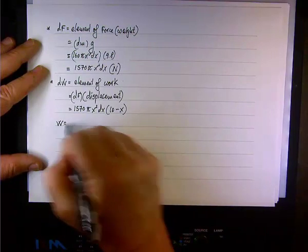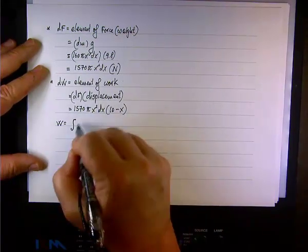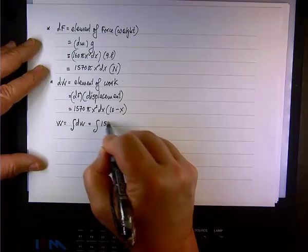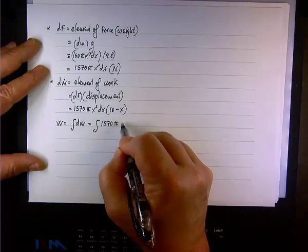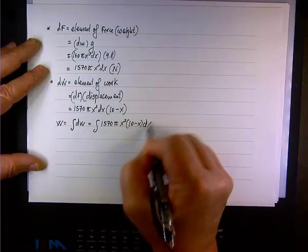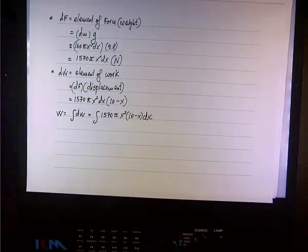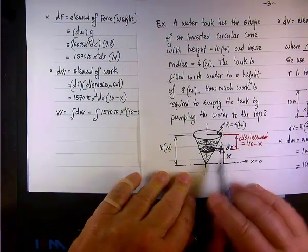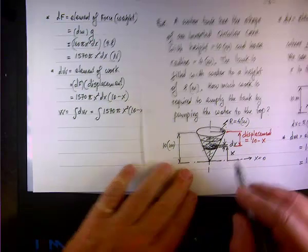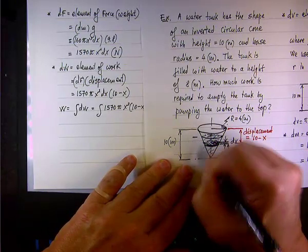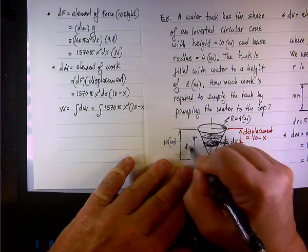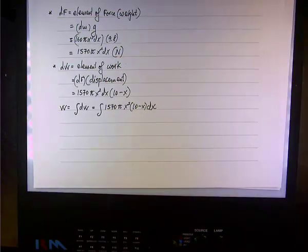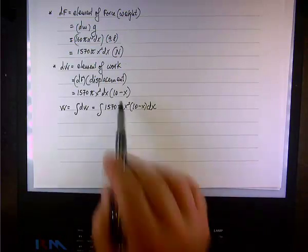And finally we are done, and the work will be the integral of dW or the integral of 1,570 pi x squared times 10 minus x dx. What are the boundaries? Well, the boundaries are straightforward because the water distributed from x equals 0 all the way to x equals 8. I didn't write it here. I should have written it here. The water level is 8 meters. So I'm going from x equals 0 to x equals 8. That will cover all the water. And the displacement is 10 minus x.